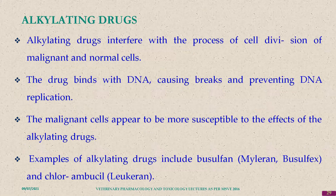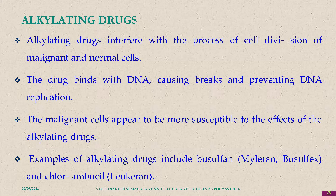Alkylating drugs interfere with the process of cell division of both malignant and normal cells. The drug binds with DNA, causing breaks and preventing DNA replication. It causes alkylation of the DNA of fast-growing cells. Malignant cells appear more susceptible to the effects of alkylating drugs. Examples include busulfan (Myleran, Busulfex) and chlorambucil.